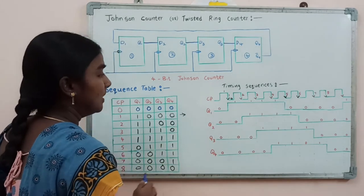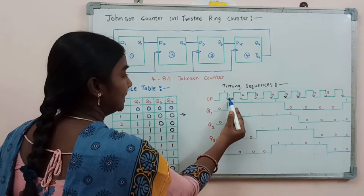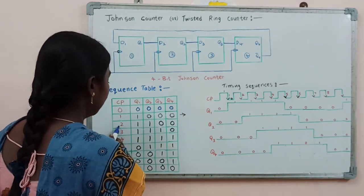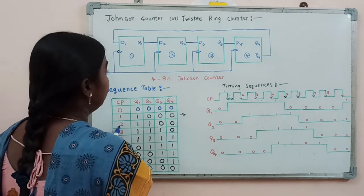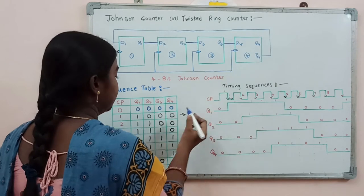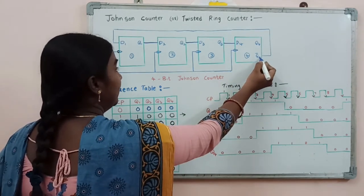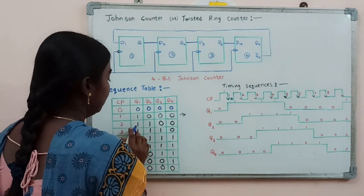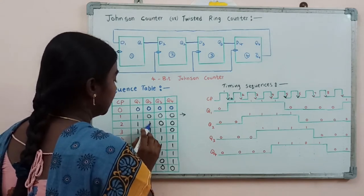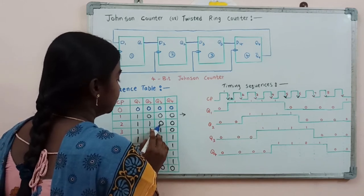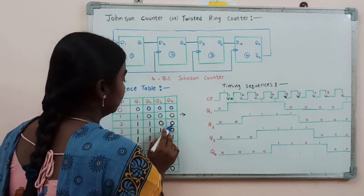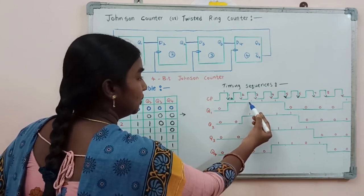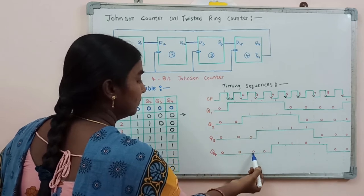By seeing the waveform pattern after applying the first clock pulse: Q1 is 1, Q2 is 0, Q3 is 0, Q4 is 0. Now we will apply the second clock pulse. Q4 is 0, so Q4 complement will be 1, and that is fed back to the first flip-flop input, making Q1 equal to 1. Then this 1 is given as input to the second flip-flop, so Q2 will be 1. Q3 is 0 and Q4 is also 0. After the second clock pulse: Q1 is 1, Q2 is 1, Q3 is 0, Q4 is 0.